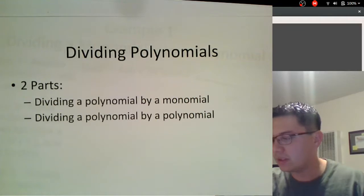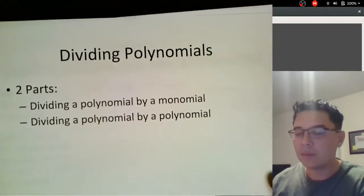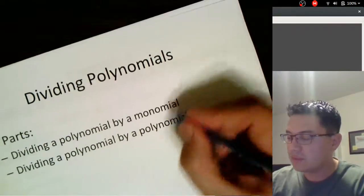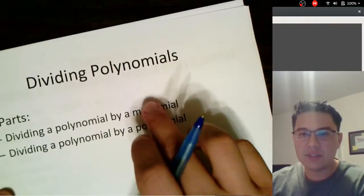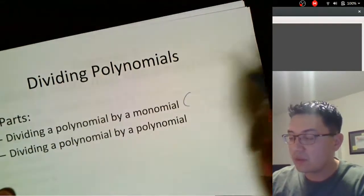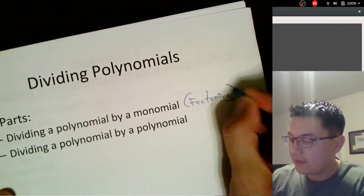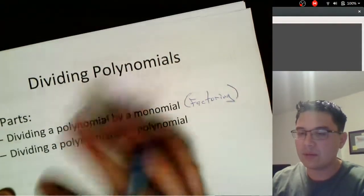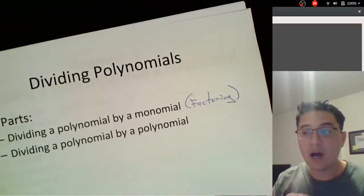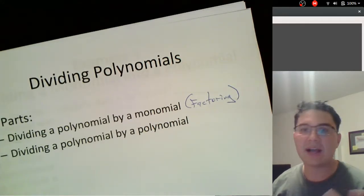So the first thing we're going to be looking at here — this entire section is about dividing polynomials. It is broken into two parts. The first one is when we do division by a monomial. You guys may know this one already from your Algebra 1 class. Another way of thinking of this is what we call factoring. This is all ultimately a form of factoring.